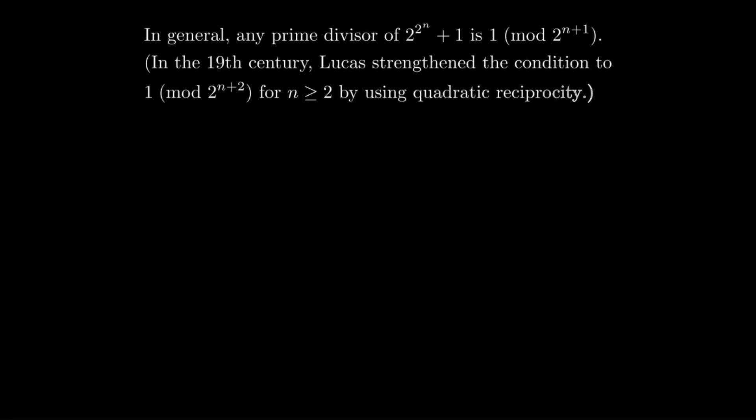And then, actually, in the 19th century, Lucas strengthened this a bit to primes being 1 mod 2^(n+2). So there's an extra factor of 2 there using quadratic reciprocity, which takes quite a bit more work. But that cuts down on the amount of work needed yet again.